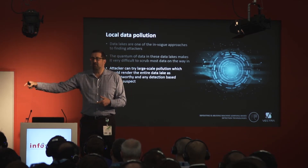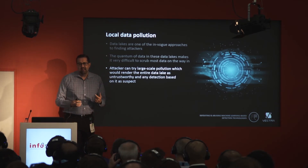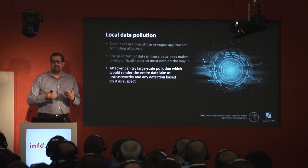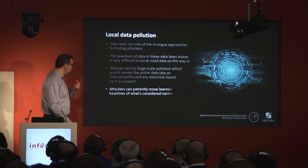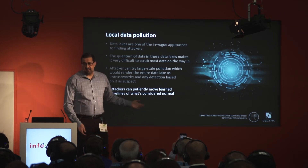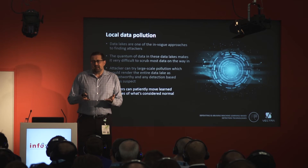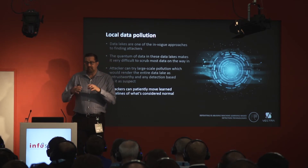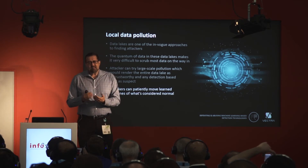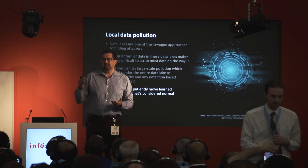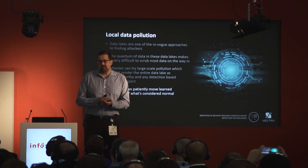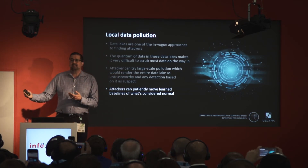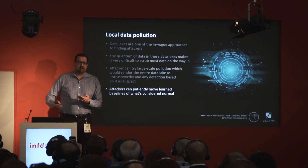Your actual attacking node may be some other node entirely — you're using sleight of hand, a diversionary tactic to make the data lake seem less trustworthy because it now has dirty data inside it. The more subtle approach is to gradually move the baselines of what is considered normal. The question is how slow does the movement have to be to not raise an alarm? If you're willing to be patient over a three-month period, you can gradually move the baseline to the point where what you want to do is no longer considered sufficiently abnormal to warrant an alert.